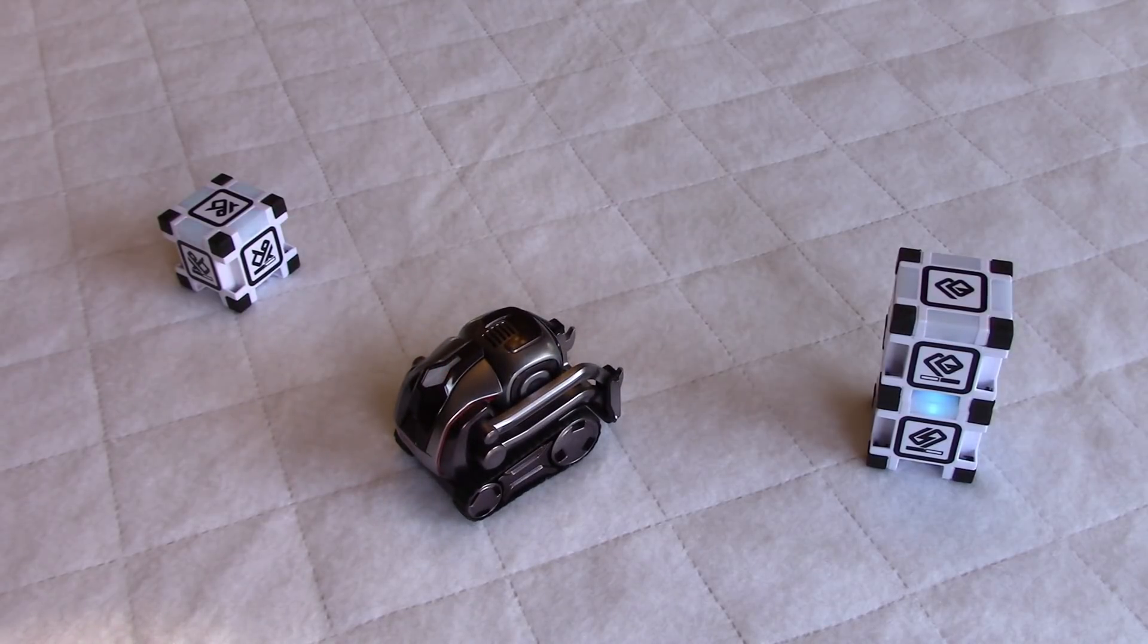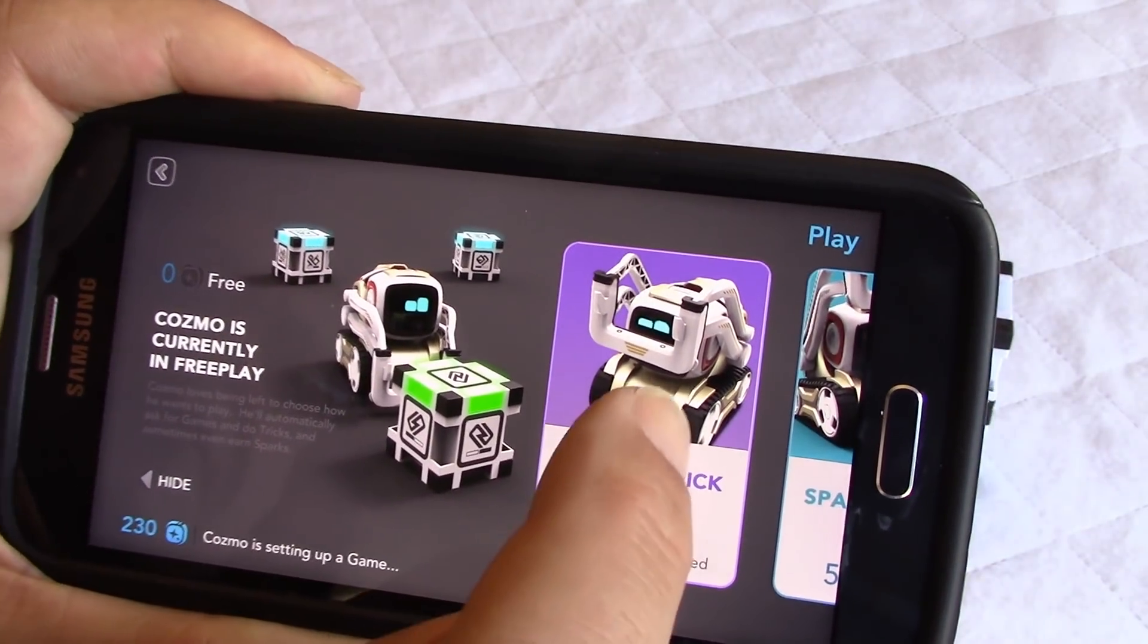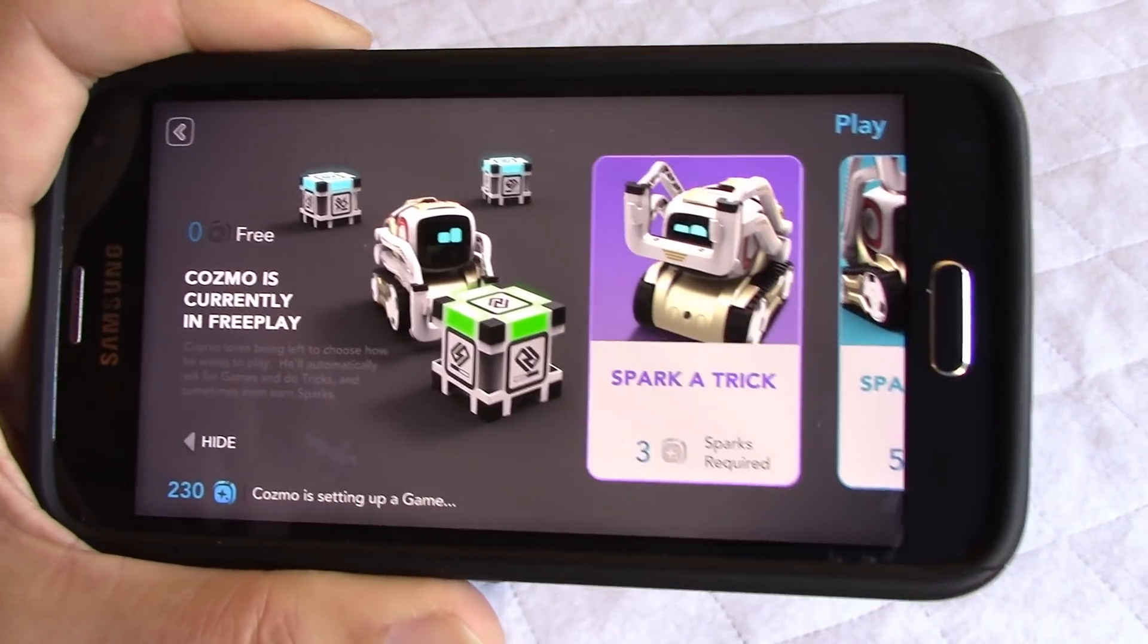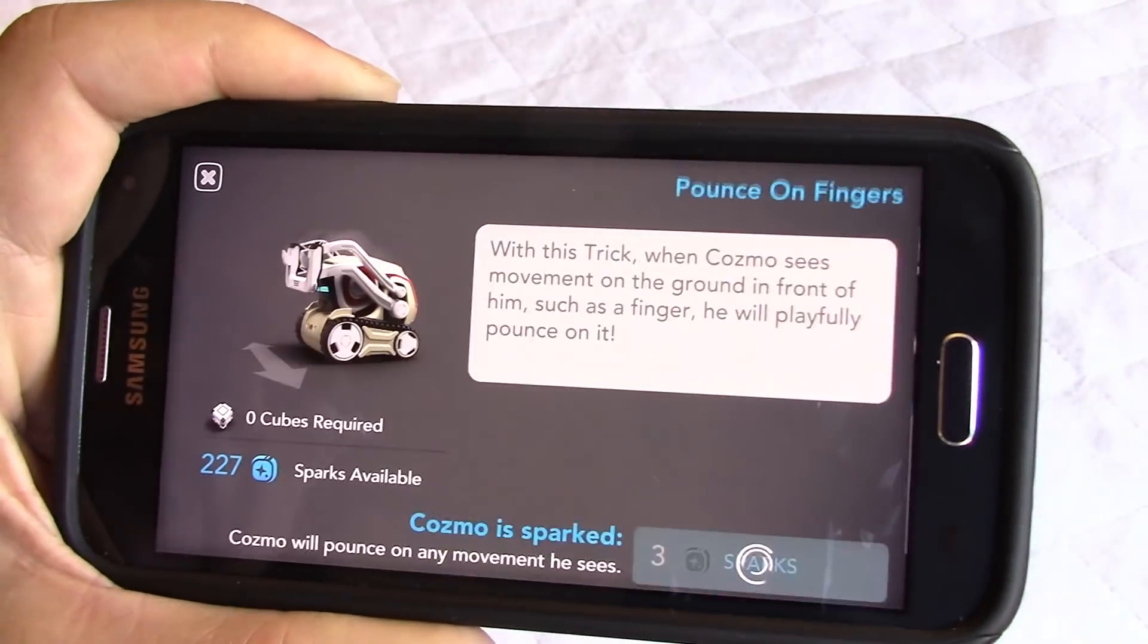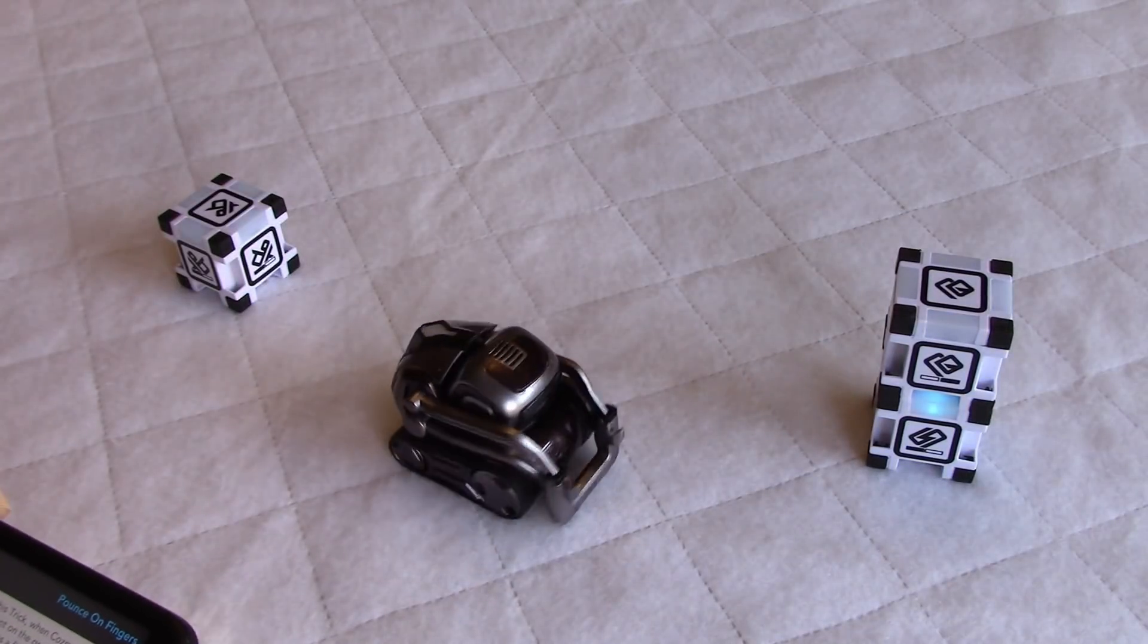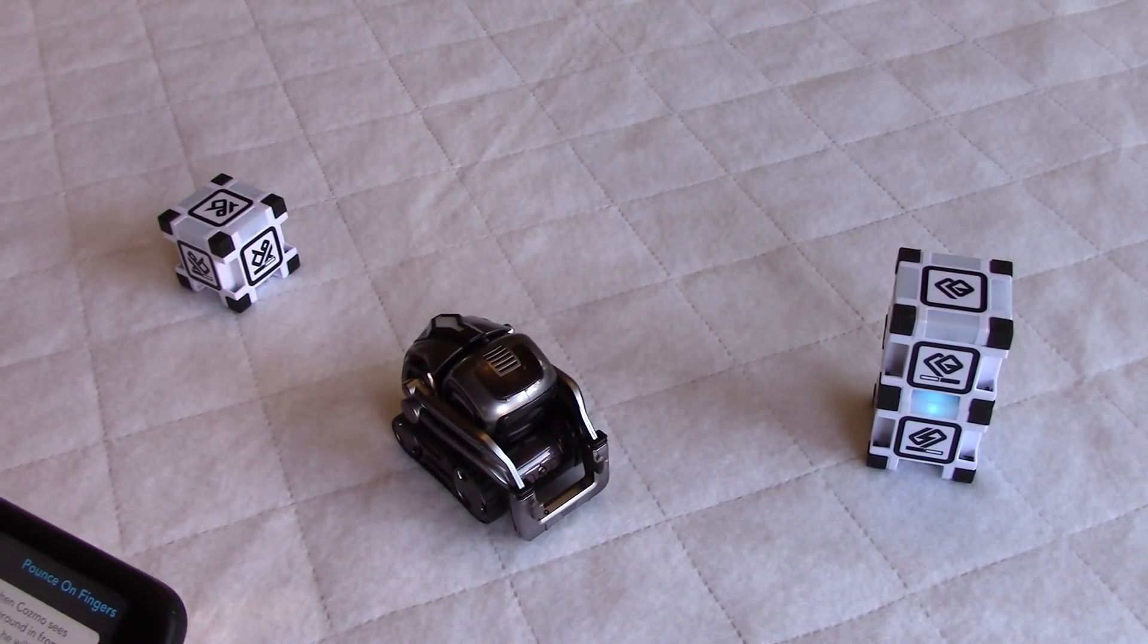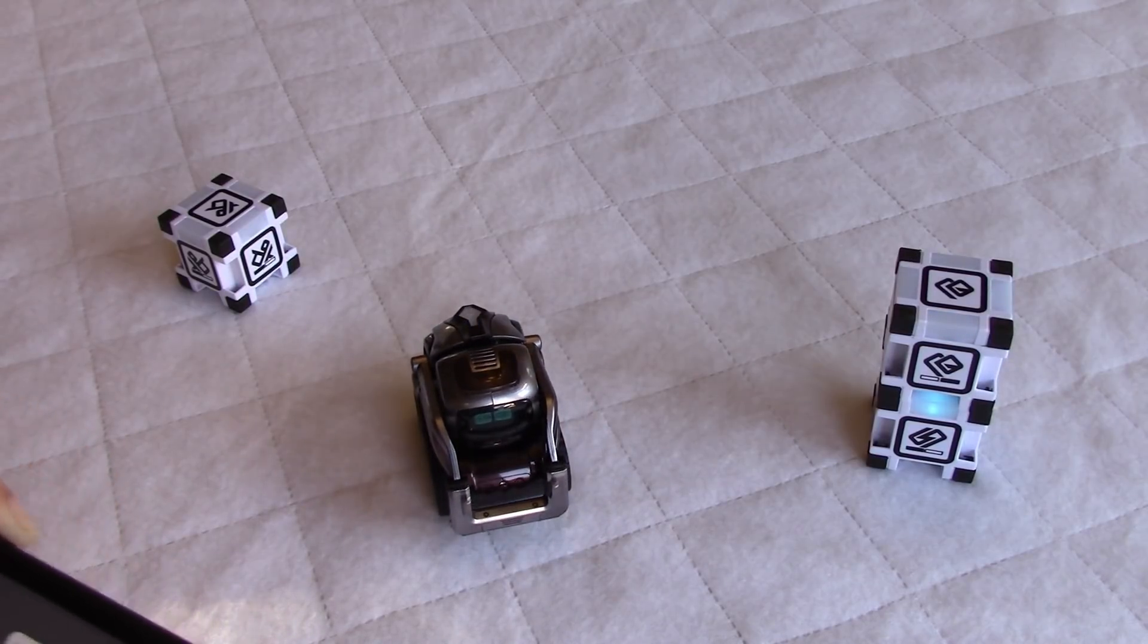Now we're going to press on play and we'll just click on spark a trick for now. That will cost us three sparks. There you go, three sparks. And with this trick, when Cozmo sees movement on the ground in front of him such as a finger, he will playfully pounce on it.